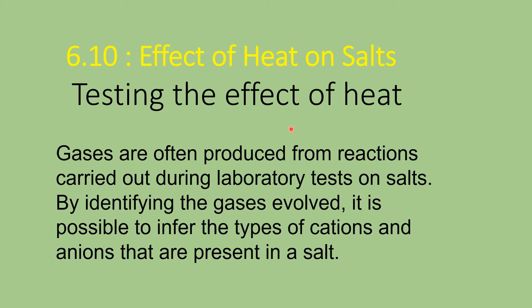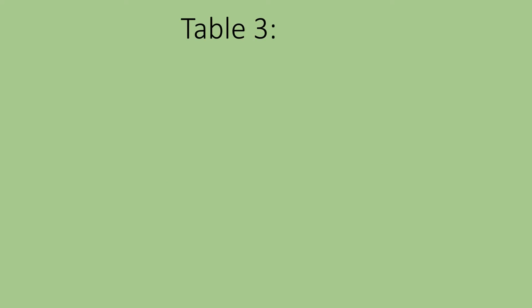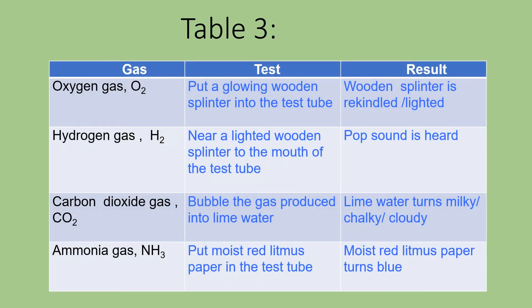Please refer to page 9, at the bottom. Gases are often produced from reactions carried out during laboratory tests on salts. By identifying the gases evolved, it is possible to infer the types of cations and anions present in a salt, and finally recognize the name of the salt. Refer to Table 3 — the table shows the tests and results for different gases.